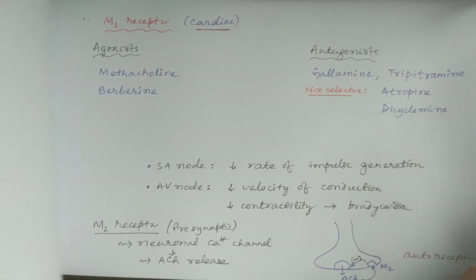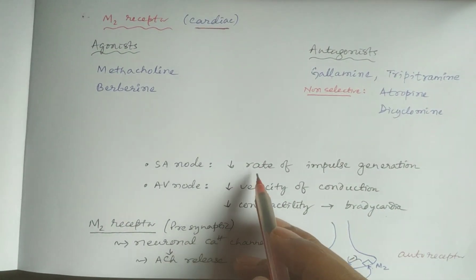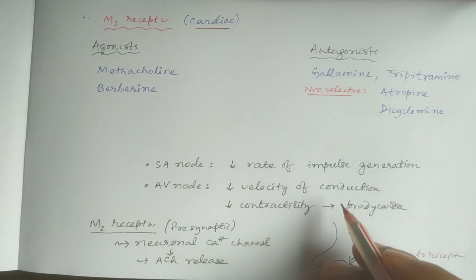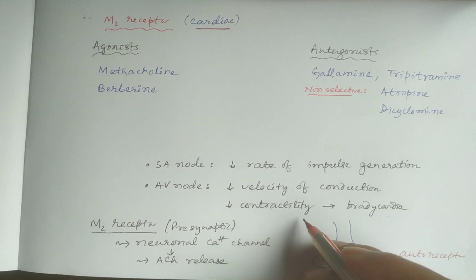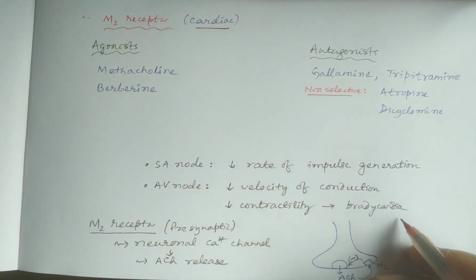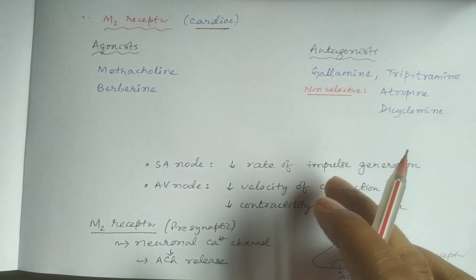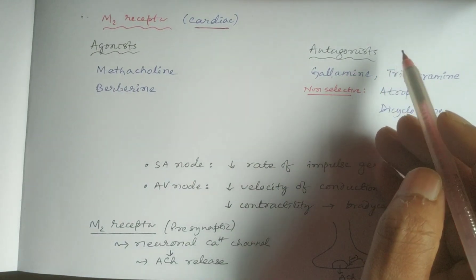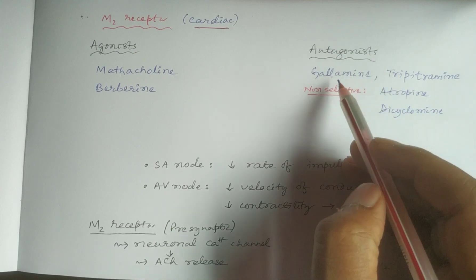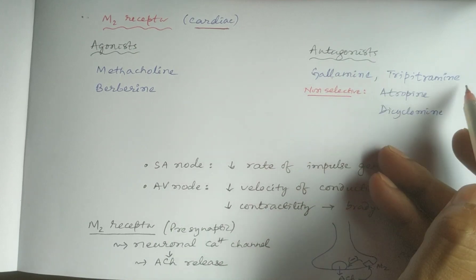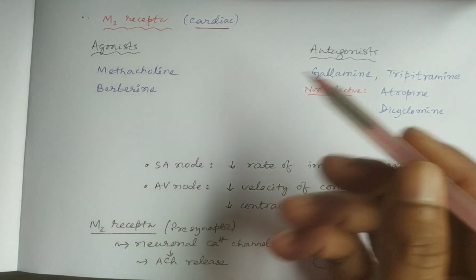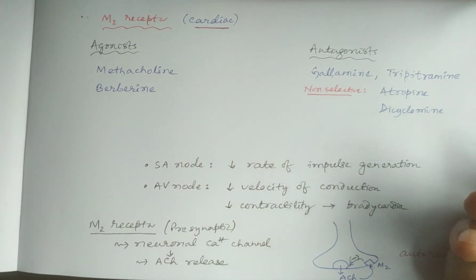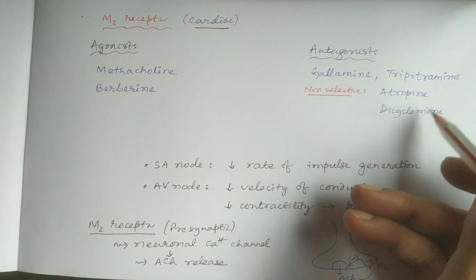In the SA node there is decreased rate of impulse generation; in the AV node there is decreased velocity of conduction and decreased contractility, all producing bradycardia. The agonists of M2 receptors include methacholine and bethanechol. Selective M2 receptor antagonists are gallamine and tripitramine, while non-selective muscarinic receptor antagonists such as atropine and dicyclomine will block all muscarinic receptors.